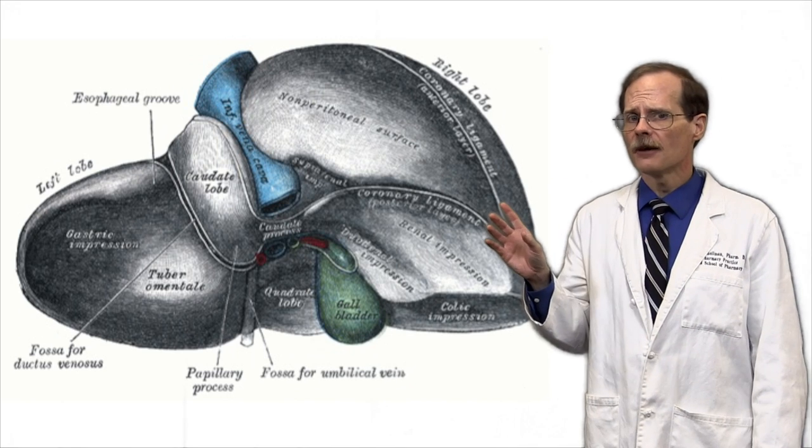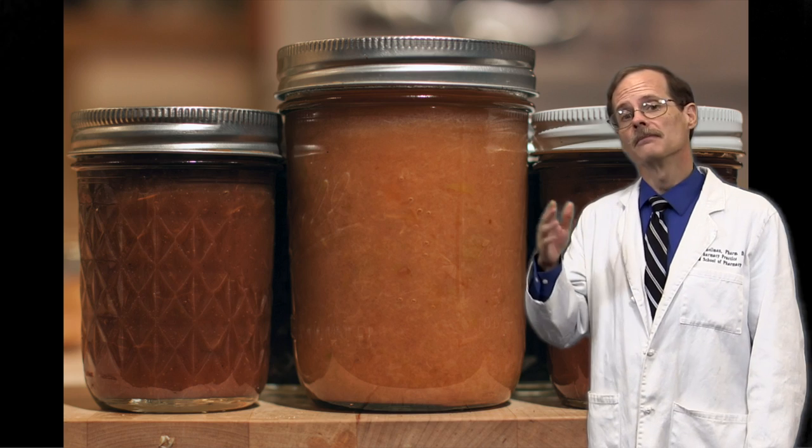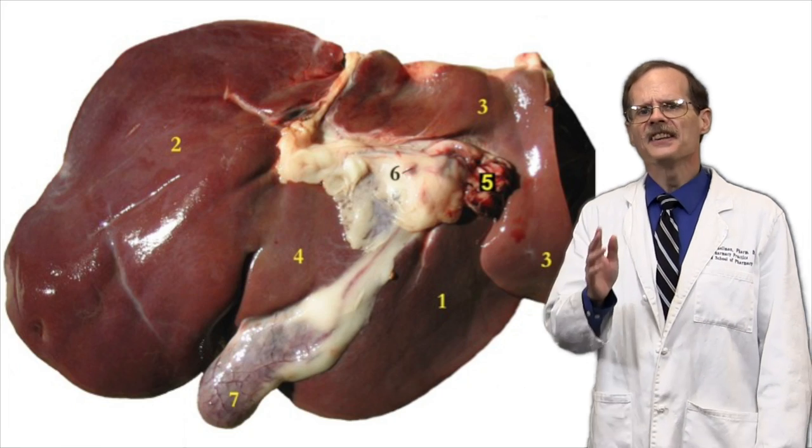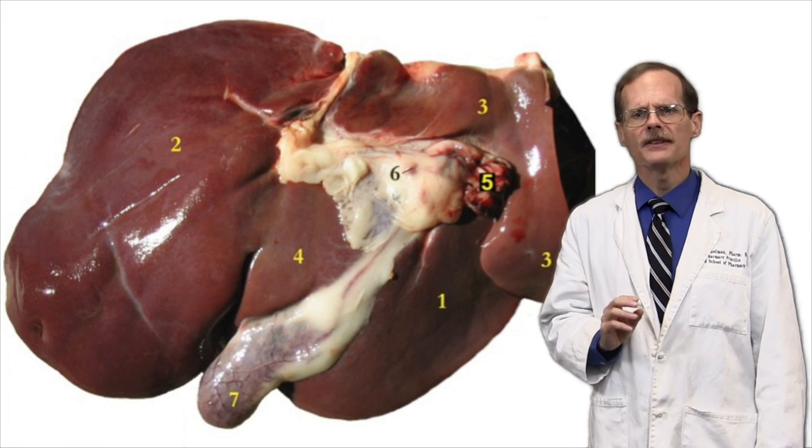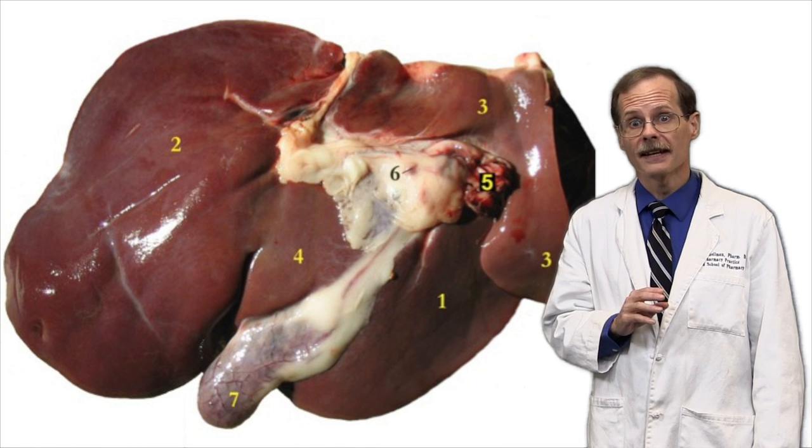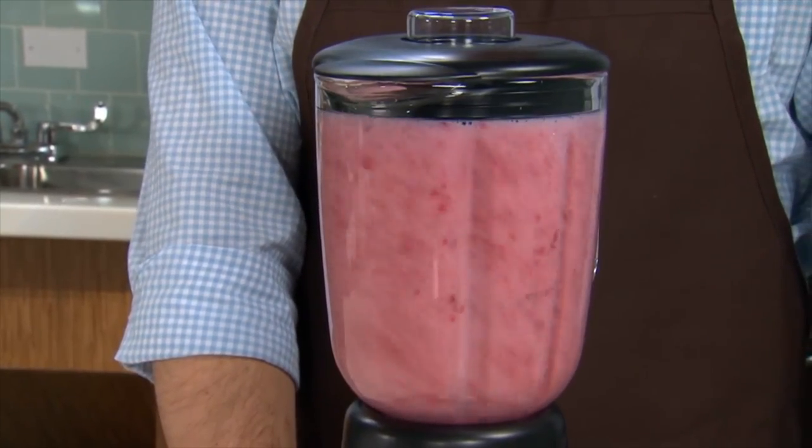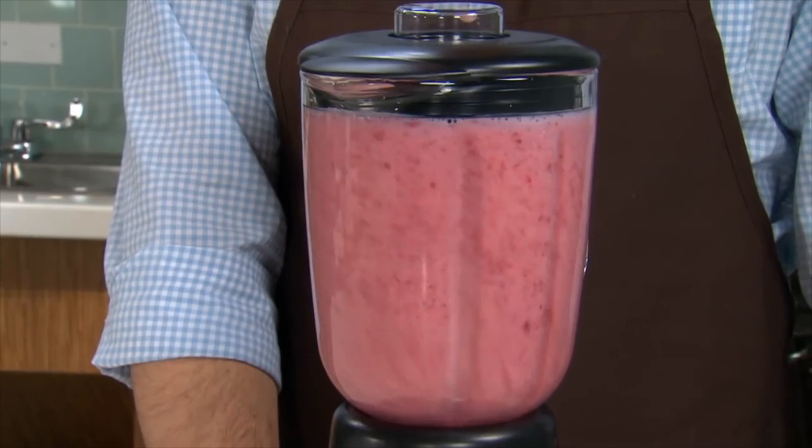It takes the liver, which is very complicated, and imagines that it's just a single container, a jar if you will. Instead of there being discrete areas in the liver with different concentrations of drug and different enzymatic activity, it assumes that everything is just all well stirred up and distributed evenly throughout the jar.